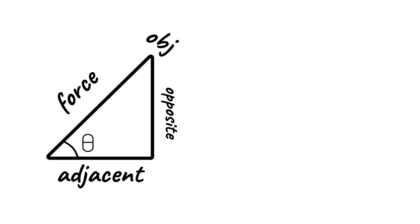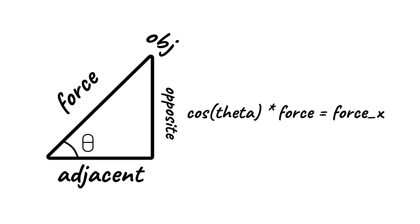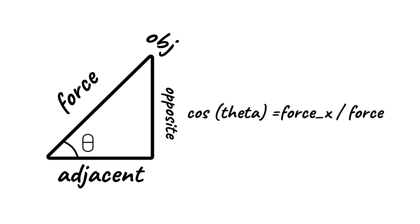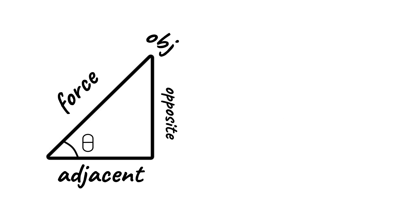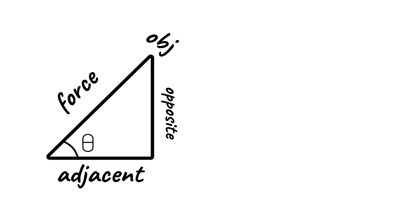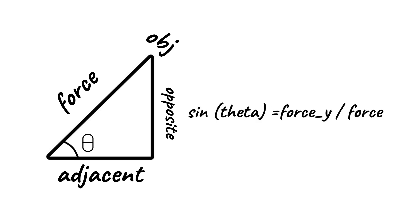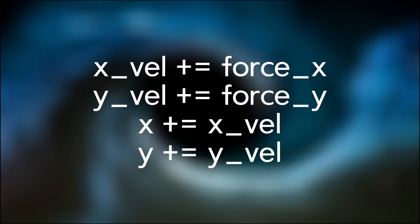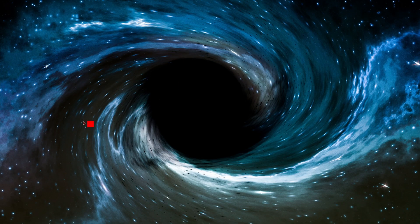To find the force x of our object, we find the cosine of angle theta. The cosine is the adjacent over the hypotenuse, so that's force x over the force. We can isolate for the force x by multiplying by the force. We do the same for force y, except that it's the sine of angle theta. The sine is just the opposite over the hypotenuse, so the force y over the force. We can isolate for the force y by multiplying by the force. Now, we can add these x and y forces to our x and y velocity, and then add our x and y velocity to our x and y position. Now we have an object moving towards the black hole. I added some basic controls for changing the forces, and now we can create some pretty cool things.